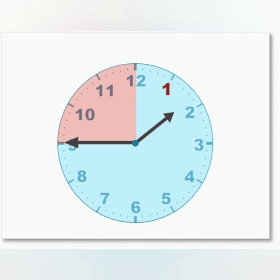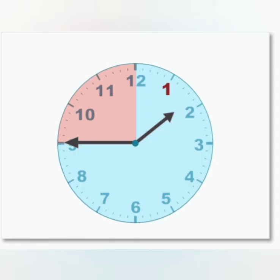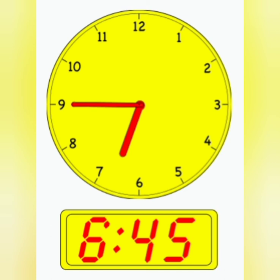Remember the difference — when we say it in words, we mention it with the next number: quarter to two. So look at the hour hand; it is nearing the next number. The small hand is nearing to two, so you can easily say that it is quarter to two. Coming to the next example: it is six forty-five, but how will you say it in words?